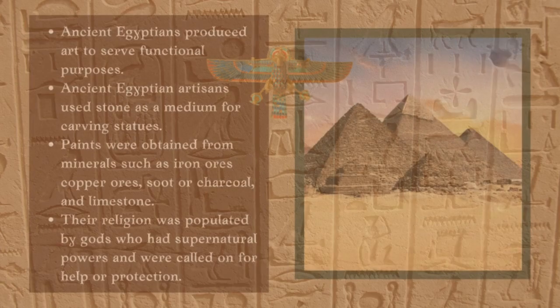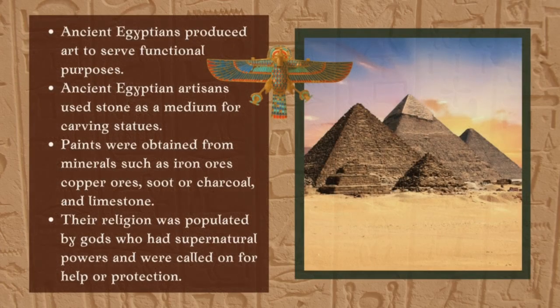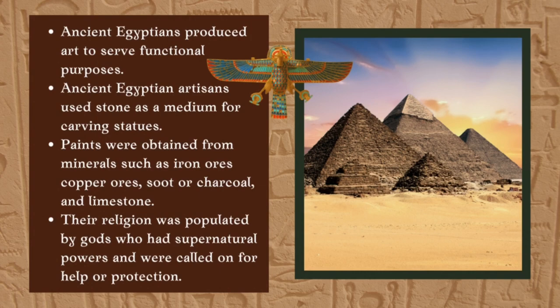Ancient Egyptians produced art to serve functional purposes that was filled with religion and ideology. To capture a subject in art was to give it permanence. Therefore, ancient Egyptian art was portrayed in an idealized and unrealistic view of the world. Art from ancient Egypt included paintings, sculptures, drawings on papyrus, jewelry, ivories, architecture, and other art media.